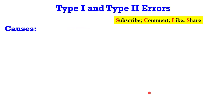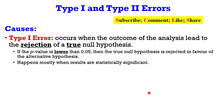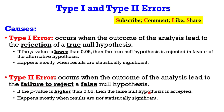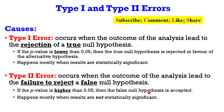Now let's look at the causes of type 1 and type 2 errors. Type 1 error occurs when the outcome of the analysis leads to the rejection of a true null hypothesis. If the p-value is lower than 0.05 — if that is the level by which you set your alpha — then the true null hypothesis is rejected in favor of the alternative. This happens mostly when results are statistically significant, and researchers are happy when this happens. For type 2 error, it occurs when the outcome leads to the failure to reject a false null hypothesis. If the p-value is higher than 0.05, the false null hypothesis is accepted, and this happens when results are statistically not significant.